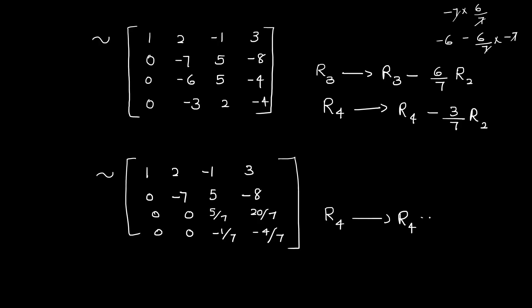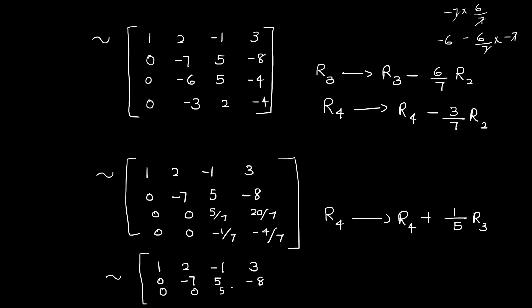Applying R4 plus 1/5 times R3, that is equivalent to: 1, 2, minus 1, 3; 0, minus 7, 5, minus 8; 0, 0, 5 by 7, 20 by 7; 0, 0, 0, 0.